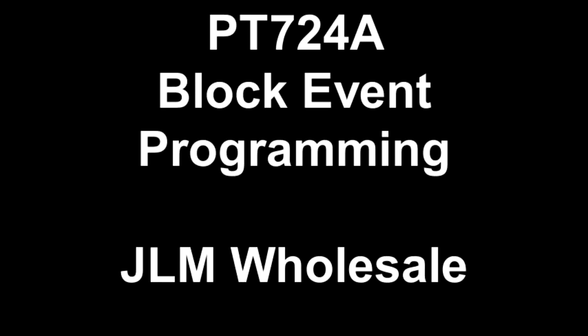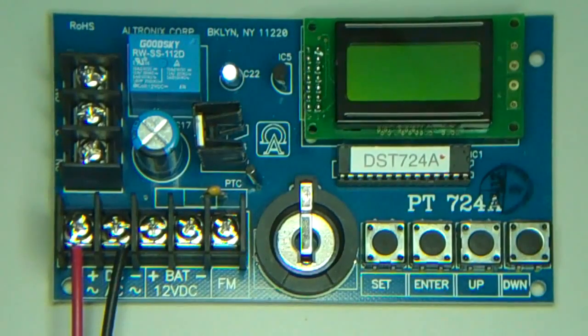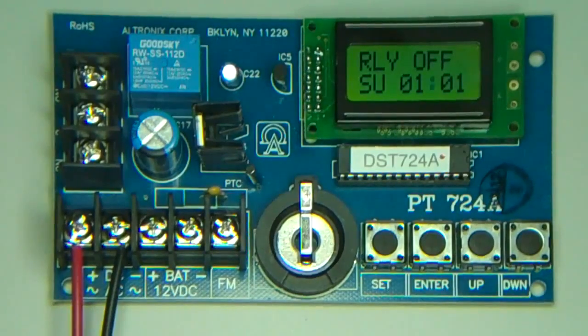Programming the PT724A Timer. When you power up the unit, you'll notice it says relay off with an incorrect day and time. To change it, press set, then press enter to enter the time and date change.